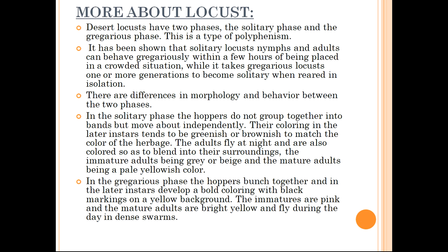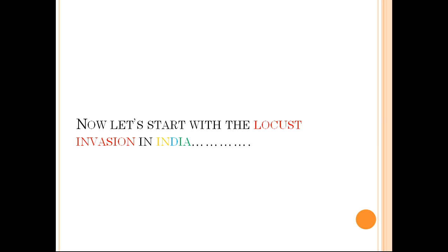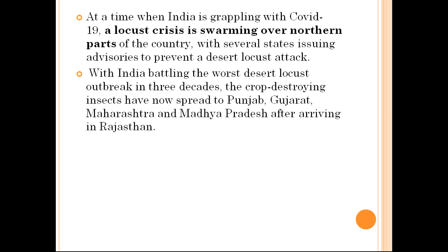In our country India, we are facing the problem with the gregarious phase of the hoppers. At a time when India is grappling with COVID-19, a locust crisis is swarming over the northern part of the country, with several states issuing advisories to prevent a desert locust attack. India is battling the worst desert locust outbreak in three decades.